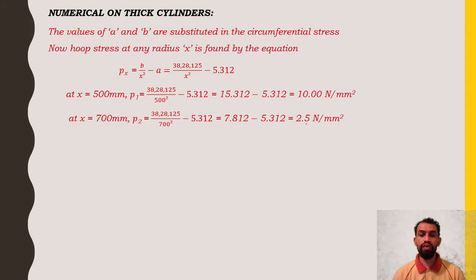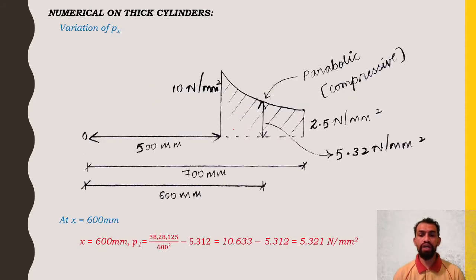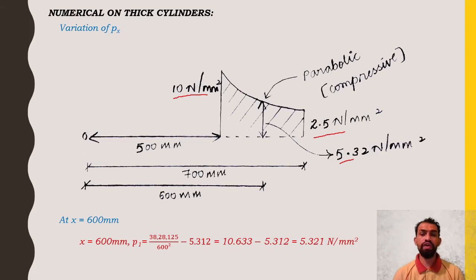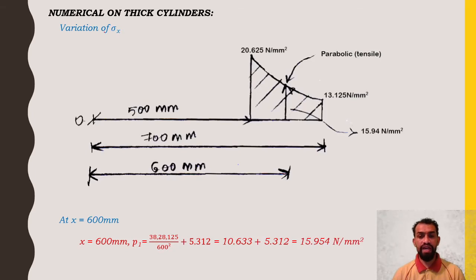For the variation diagram: radial pressure px = 10 N/mm² at internal radius 500 mm and 2.5 N/mm² at external radius 700 mm. At the mid-thickness radius of 600 mm, the value is 5.32 N/mm². The radial stress varies parabolically in compression from 10 at the inner surface to 2.5 at the outer surface, with 5.32 at mid-thickness.